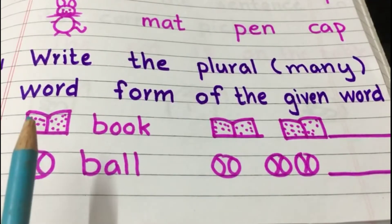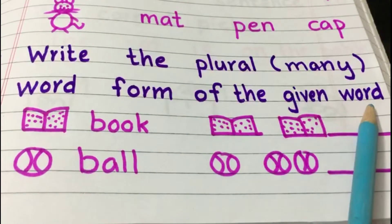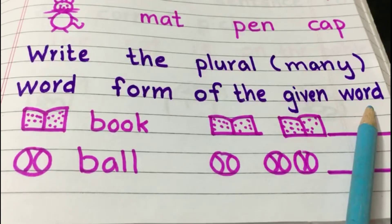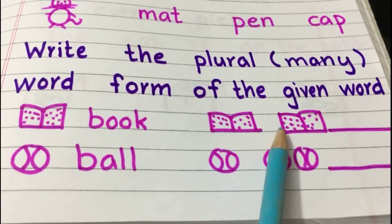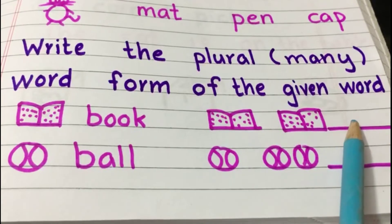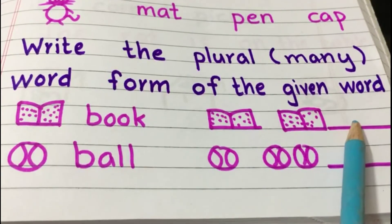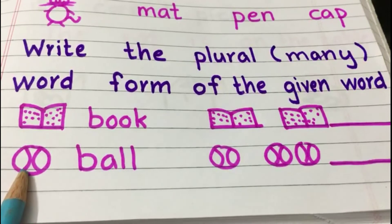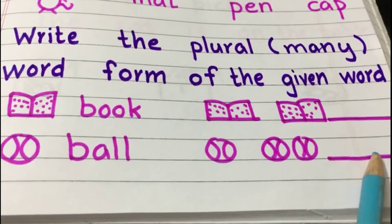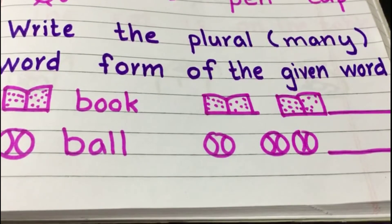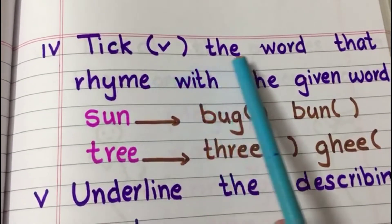This is our third question. This question is based on singular and plural. The question is: write the plural — the many-word form — of the given word. Here we have a picture of one book, so it is singular: book. Here we have two books, more than one, so we call it plural: books. Ask your child to write the spelling of books. Here we have a picture of a ball — singular. The other side shows three balls — plural form. Ask your child to write balls.